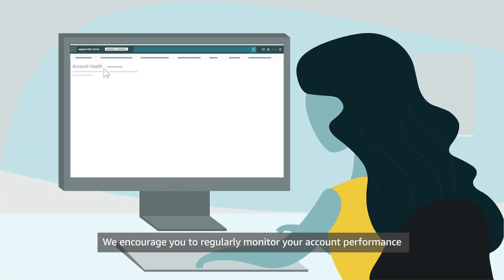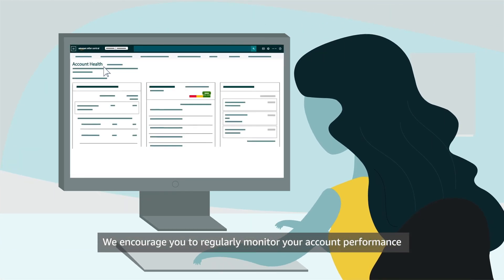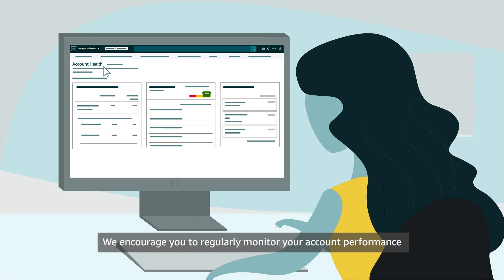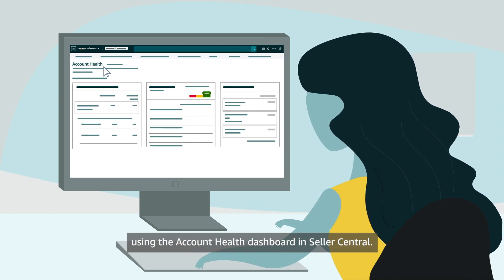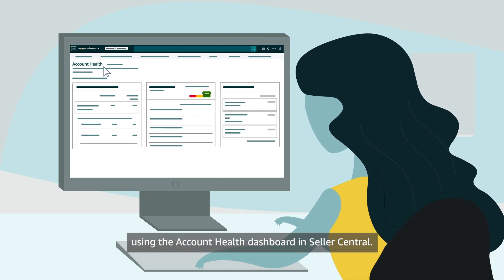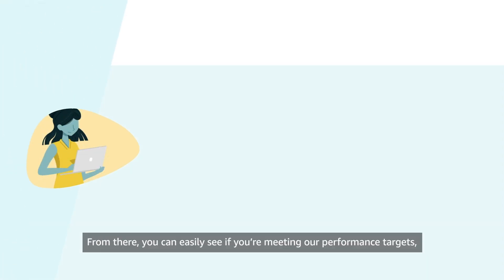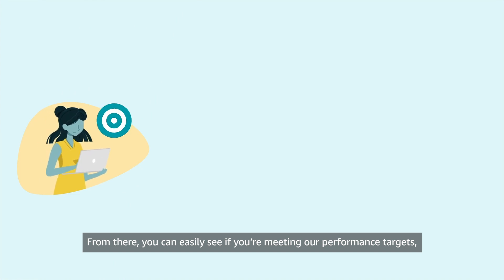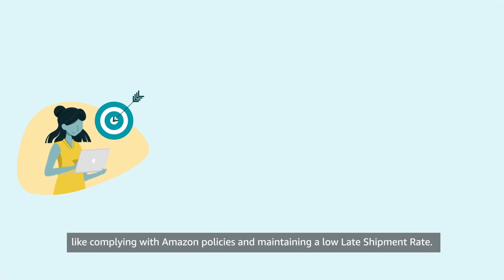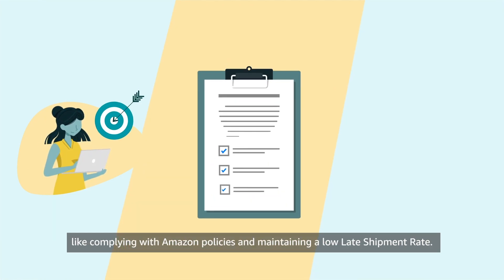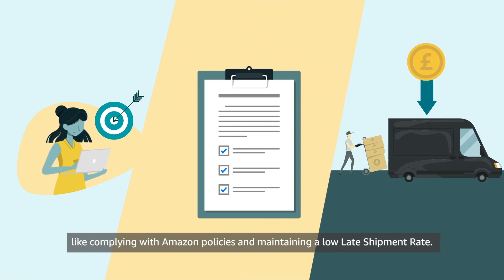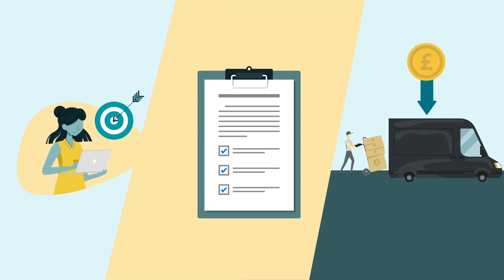We encourage you to regularly monitor your account performance using the Account Health Dashboard in Seller Central. From there, you can easily see if you're meeting our performance targets, like complying with Amazon policies and maintaining a low late shipment rate.